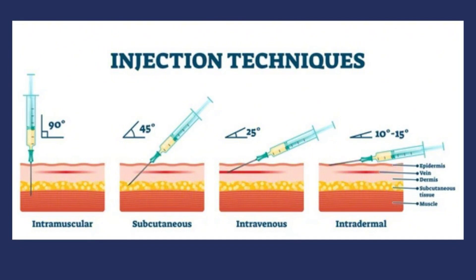A simple way to remember these injections is their needle angles. The intramuscular injection is at 90 degrees. The subcutaneous injection is usually about 45 degrees. The intravenous injection is usually about 15 to 30 degrees. The intradermal injection is usually about 10 to 15 degrees. You won't always have a protractor — with practice, you'll know how to angle your needle. However, due to technological advancements, we now have needles designed not to go beyond a particular depth, even if placed at 90 degrees.